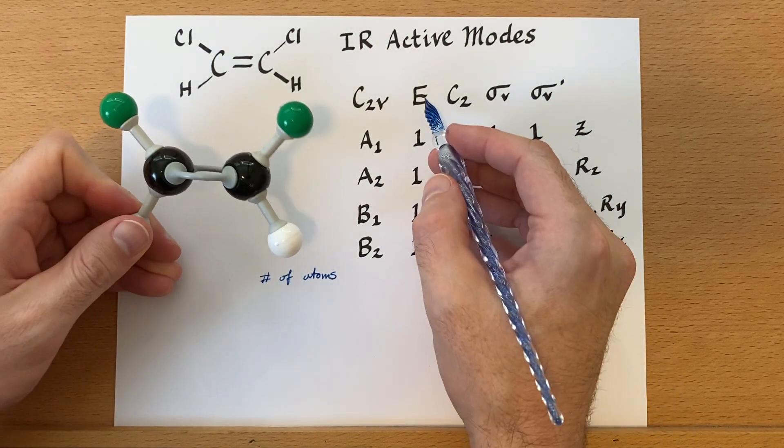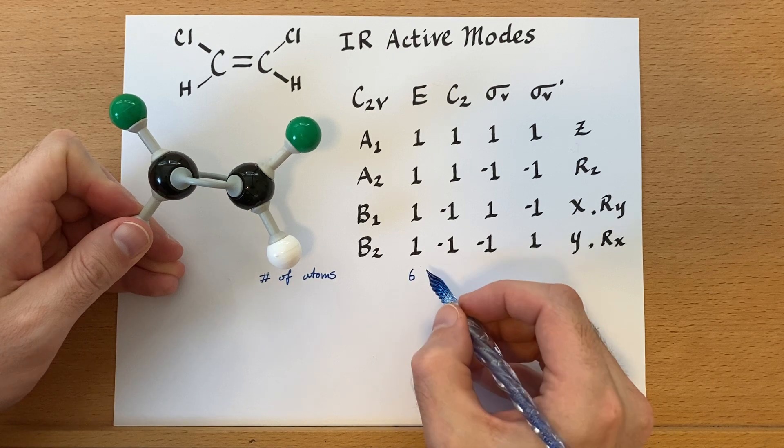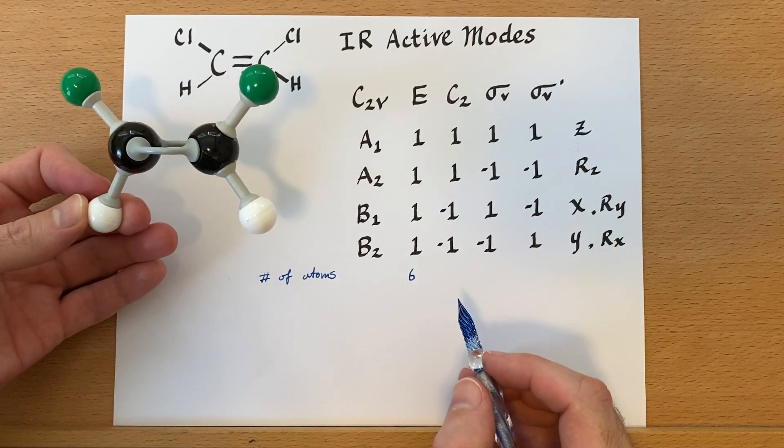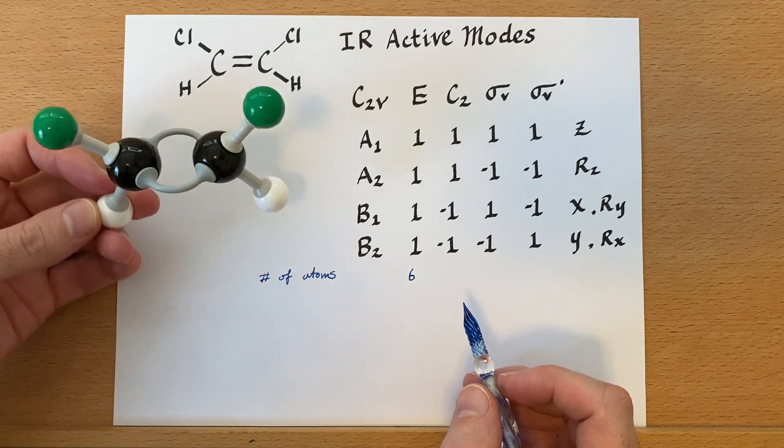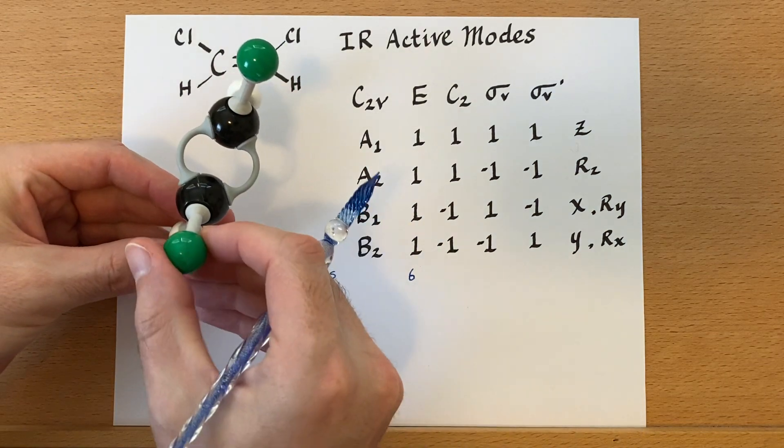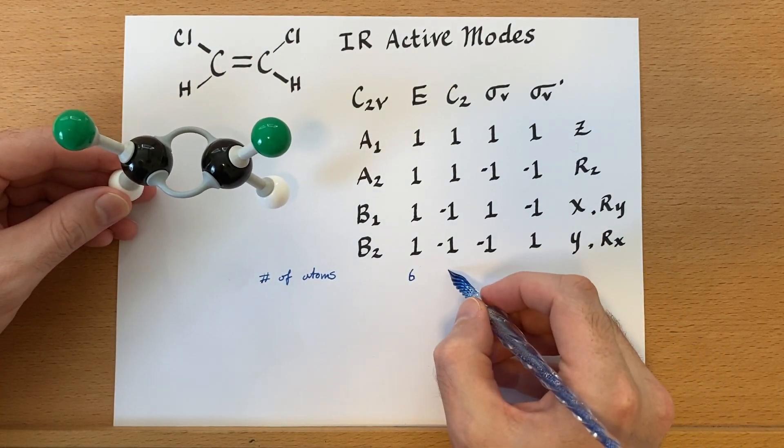So for the identity operation, we'll have six that remain in the same location because we don't do anything to the molecule. Now, if we rotate the molecule on the C2 axis, just like so, all of the atoms have moved. So that is a zero.